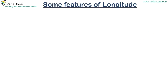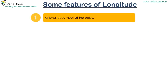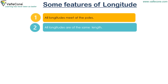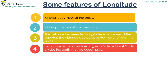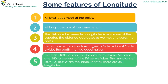Some features of longitude: all longitudes meet at the poles. All longitudes are of the same length. The distance between two longitudes is maximum at the equator, and the distance decreases as we move towards the poles. Two opposite meridians form a great circle, which divides the earth into two equal halves. There are 180 meridians to the east of the prime meridian and 180 to the west. The meridians of 180 degrees east and 180 degrees west are the same, so in total there are 360 longitudes.